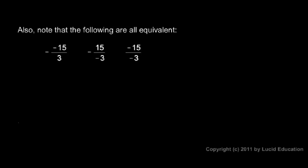Note that all of these are also the same. Here we have negative negative fifteen over three, or negative fifteen over negative three — in all three cases we have two negative signs. An even number of negative signs always cancels out, leaving us with a positive result. So all of these are equal to positive five.